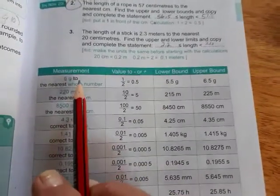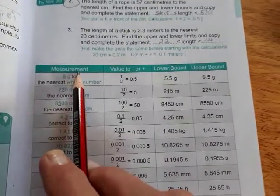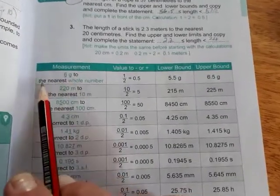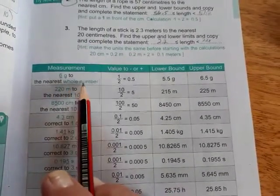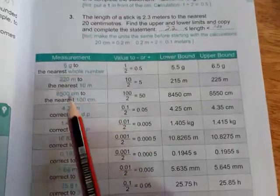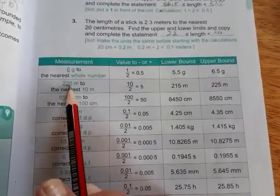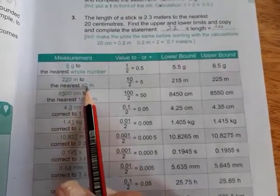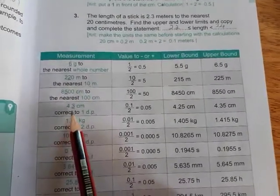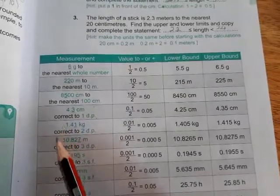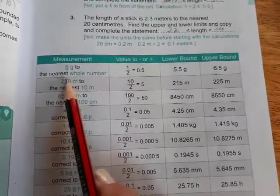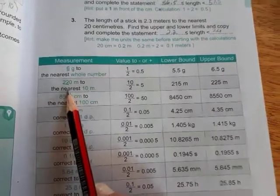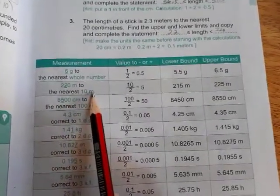So when you look at the left column, it gives you a measurement. In this case, it is 6 gram, which was rounded to the nearest whole. Then the next one gives you 220, where it says it was rounded to the nearest 10 meter. So in any limit of accuracy question, you will be given numbers, and you will also always be given the nearest something.